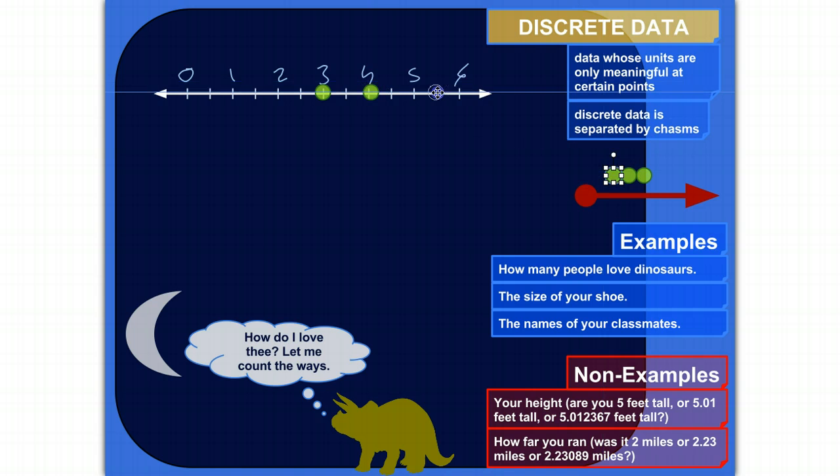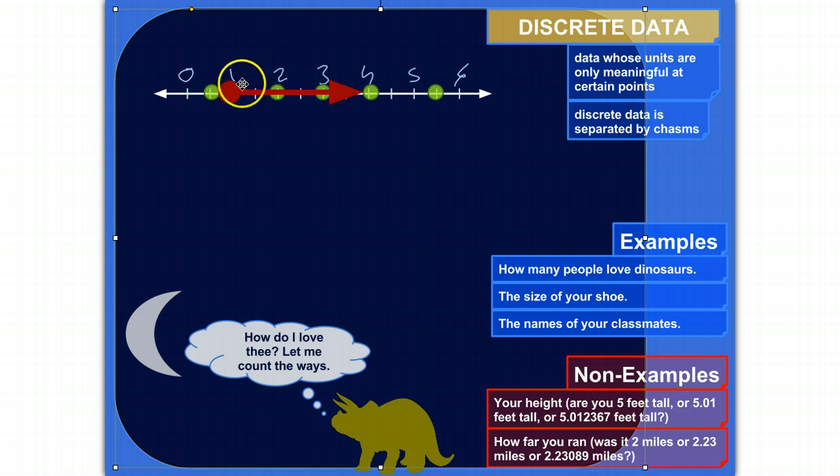Discrete kind of means separated or away from the others. So these are little points of data that aren't touching each other. They're separated off. The opposite of discrete data would be continuous data. This is what continuous data would look like, just an infinite number of points of data along the line.